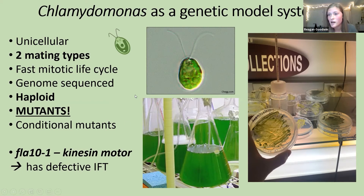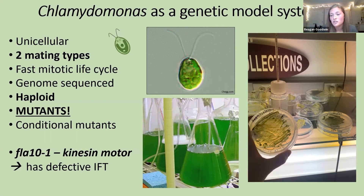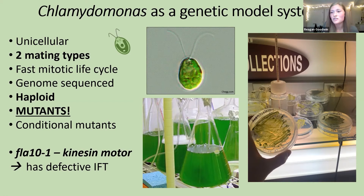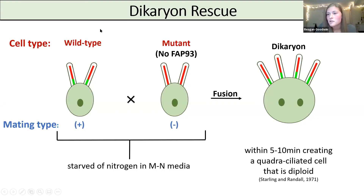Particularly for my project, it's important that Clamie has two different mating types. The cells are also haploid, meaning they only have one set of genes unlike humans, which makes it really easy to make mutants. One particular mutant I'm using is a conditional mutant called FLA-10 — a temperature-sensitive mutant. At room temperature it's normal, but when you turn up the heat it's defective in the kinesin motor involved in IFT — the snowshoes in the analogy — so it can't climb up the mountain to the tip.